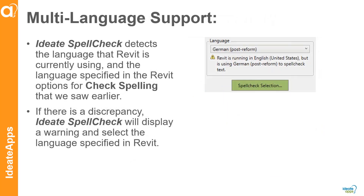We have multi-language support. If you have the default in Revit set to American English and then you go to ID8 Spellcheck and change it to German, it's going to tell you that. It will still do that, but it just says, 'Hey, Revit is running in English but it's using German.' So it gives you that nice warning.